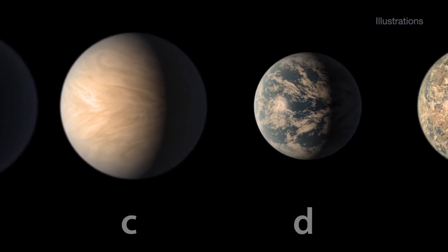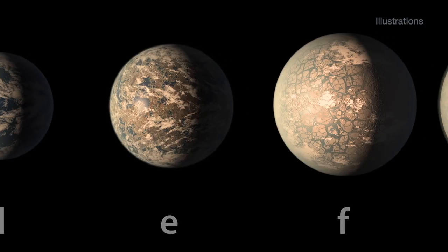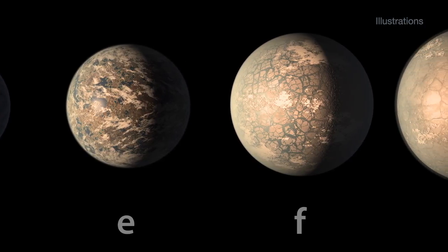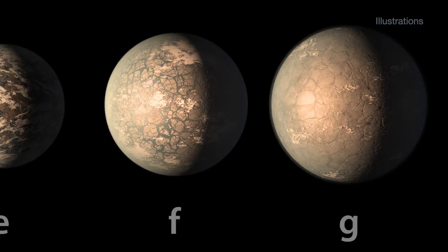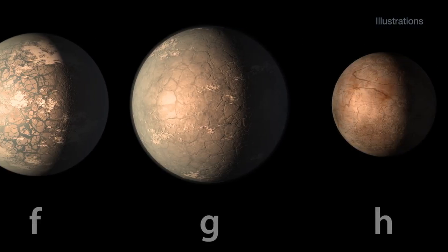To summarize, Hubble has not seen evidence of thick, hydrogen-rich atmospheres for planets B, C, D, E, and F, and of those five planets, E and F are in the habitable zone. Planet G needs more data, and Hubble has not yet looked at planet H.